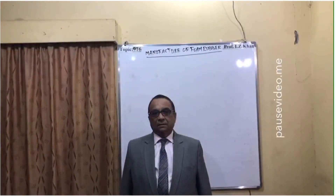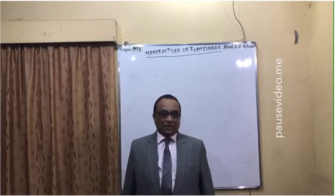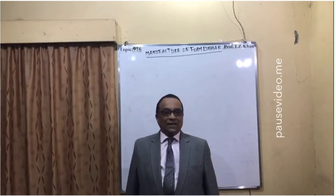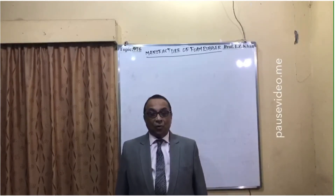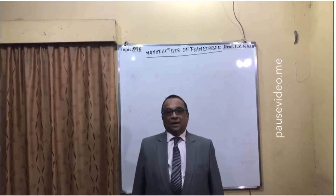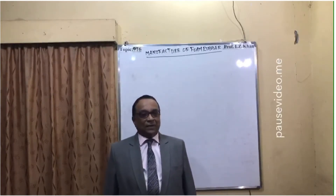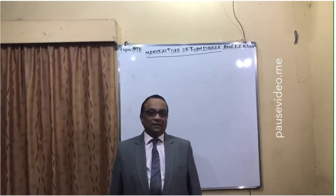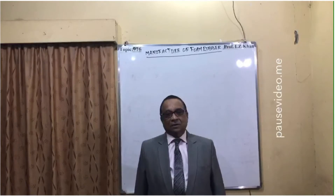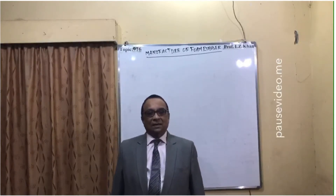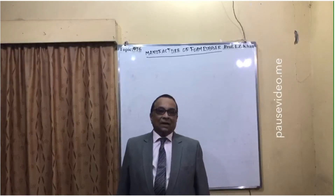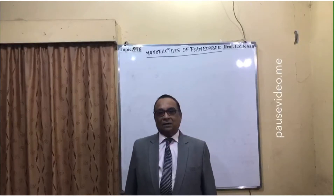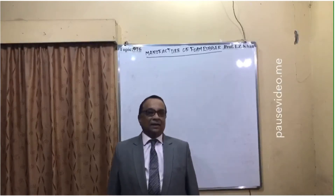Hello everyone, welcome to lecture number 976. Today's topic is the manufacture of foam rubber. Foam rubber is manufactured by two methods: one is gas blowing into compound latex, and the second one is by chemical process.